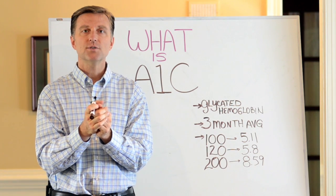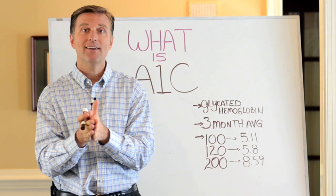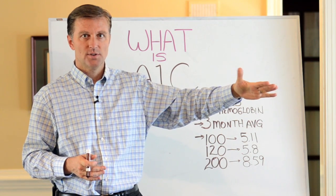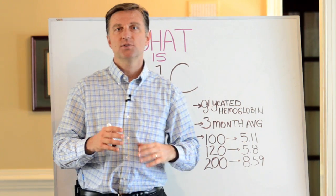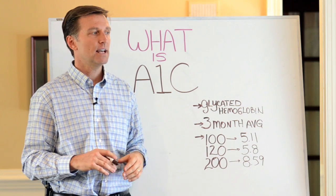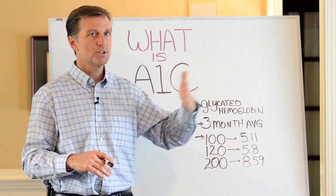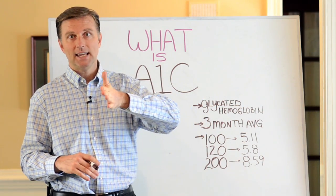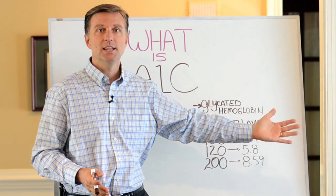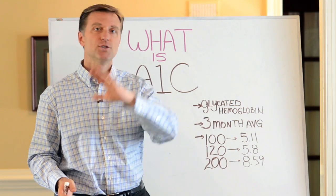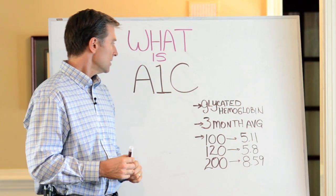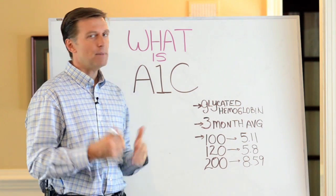It measures a three-month average of your blood sugars. It's better than just measuring a one-shot deal because, for example, let's say today it's 100, tomorrow it's 120, next day it's 180, then it's 100. You did that for three months and then you took an average of all those numbers — that's what it measures.